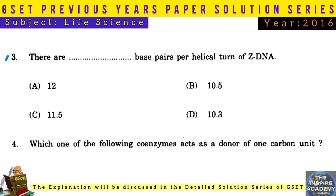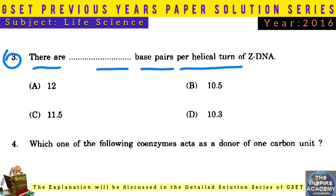Question No. 3: There are how many base pairs per helical turn of Z-DNA? Answer: 12 base pairs.